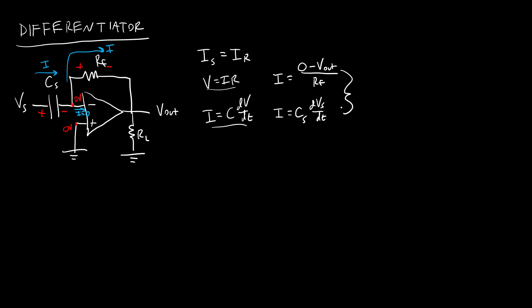I can now set these two currents equal to each other. So I have negative Vout over RF equals Cs dVs dt. And if I multiply both sides by RF and by negative 1, I will then get Vout equals negative RF Cs dVs dt. So there we go. That is why this is called a differentiator, because the output voltage is proportional to the derivative of the input voltage scaled by this factor that depends on the values of the feedback resistor and the source capacitor.